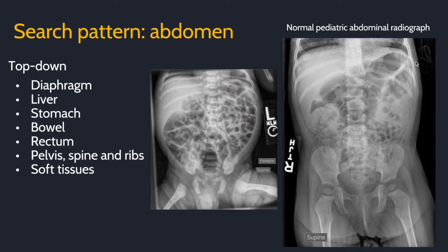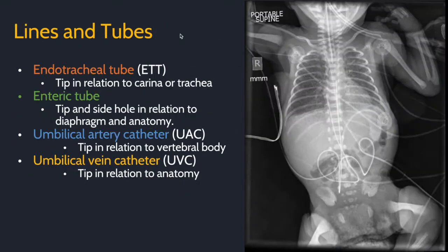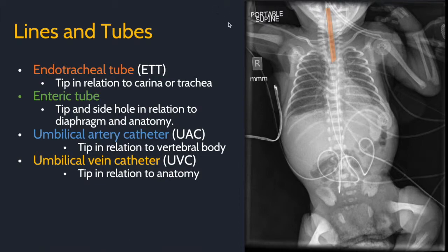This is a normal pediatric abdominal radiograph, and this is a three-week-old infant abdominal radiograph with multiple non-dilated loops of air-filled bowel. Here are the four most common tubes and lines in pediatric radiology. Take a look at this radiograph and see if you can spot them. In orange is the endotracheal tube — describe where the tip is in relation to the carina and the trachea. Here it would be maybe two or three centimeters above the carina in the mid-thoracic trachea.